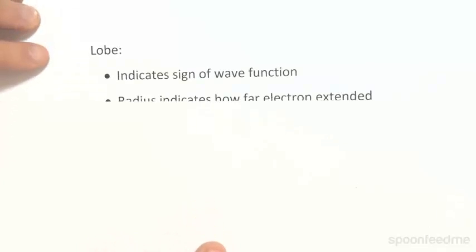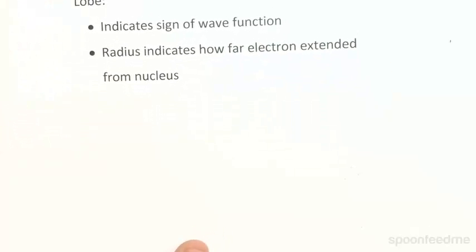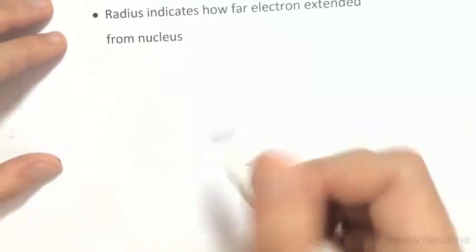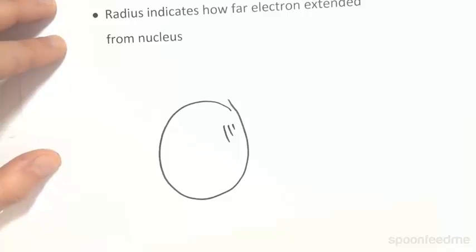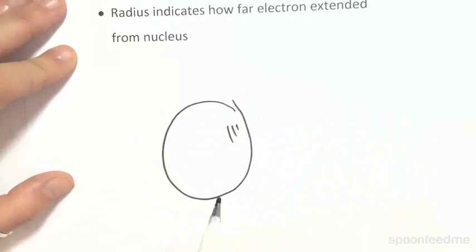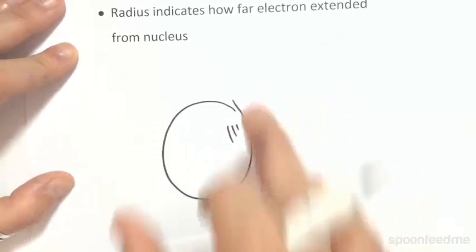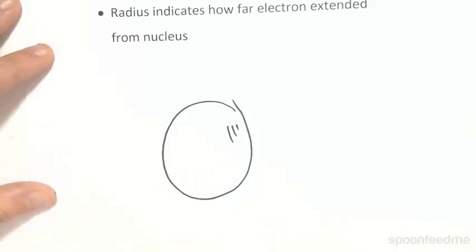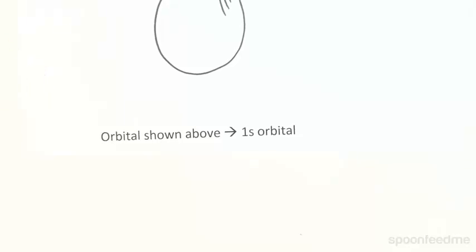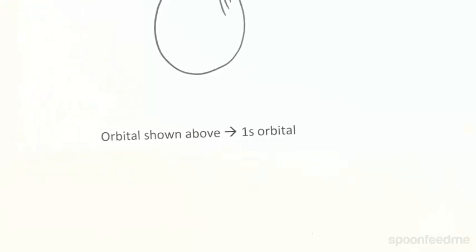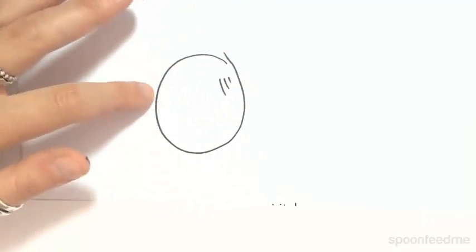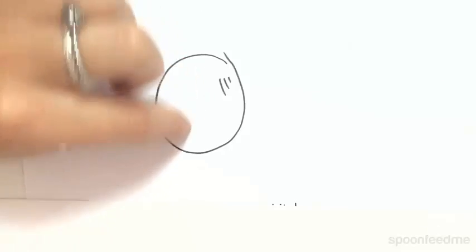We can also simply represent this as a lobe. This lobe indicates the sign of the wave function. The spherical lobe indicates the sign of the wave function, and the radius indicates how far the electron has extended from the nucleus — it's literally just going to be like a sphere, where the boundaries of the sphere show how far the electron has gone from the nucleus. This type of electron orbital is known as a 1s orbital.